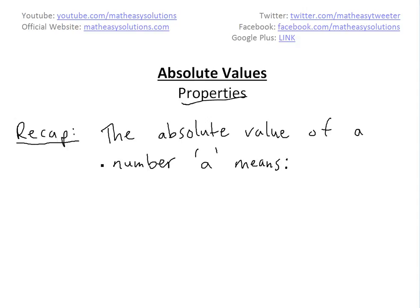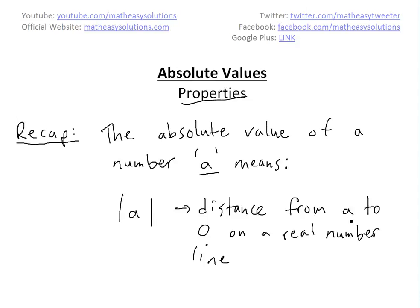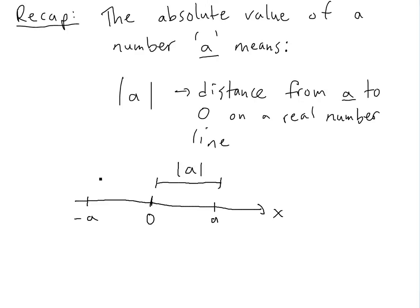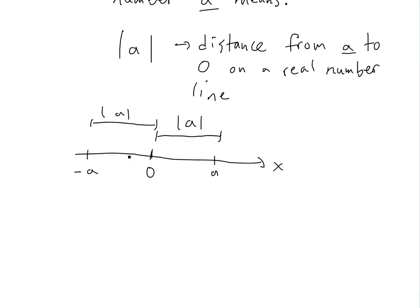Before I get into the properties, I just want to recap on what absolute value is. Basically, the absolute value of a number A is denoted by two vertical lines, and what this means is it's just the distance from A to zero on a real number line. If you draw a line with zero in the center, and negative A and A on either side, the distance from A to zero is the absolute value.